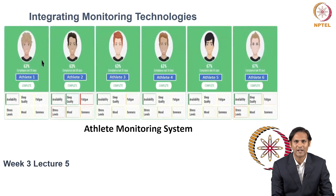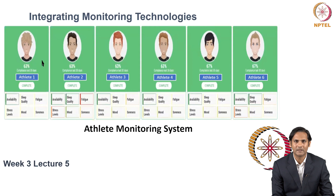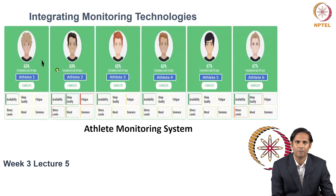An athletic monitoring system dashboard would vary from software to software and based on the user interface required by a given practitioner. In a sample athletic monitoring system dashboard, it provides information about monthly progression, which includes total workouts completed, athlete availability, sleep quality, fatigue, and soreness for a given month. These features can be added or subtracted based on what needs to be monitored for a given athlete, group of athletes, and training block.